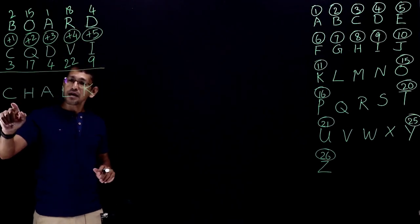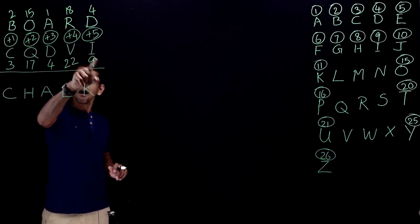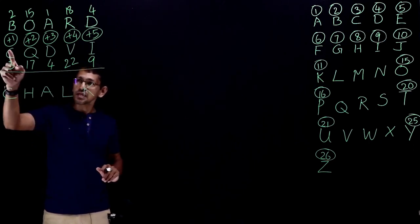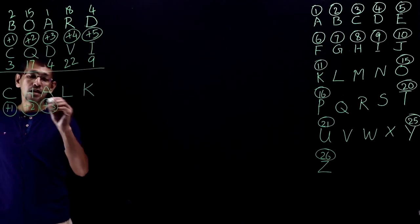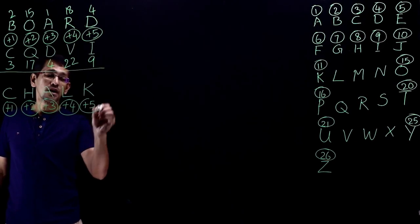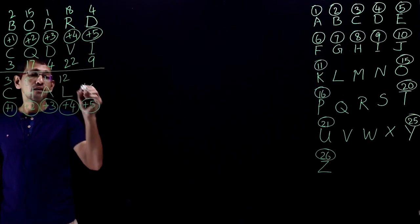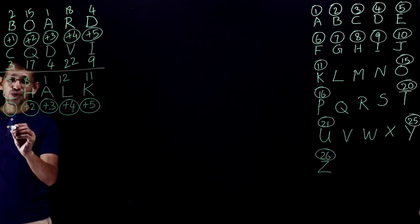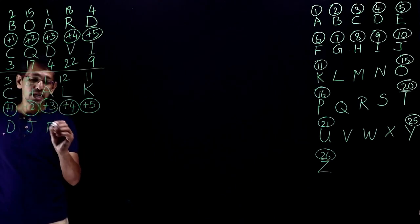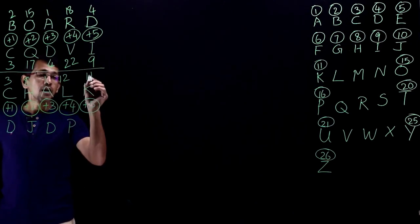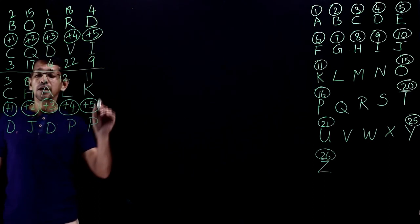We apply the same pattern to CHALK, because the question asks: if BOARD is coded as CQDVI, how is CHALK coded in the same language? The pattern is plus 1, plus 2, plus 3, plus 4, plus 5. C is 3, H is 8, A is 1, L is 12, K is 11. So: 3+1=4 (D), 8+2=10 (J), 1+3=4 (D), 12+4=16 (P), 11+5=16 (P). The code for CHALK is DJDPP.